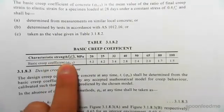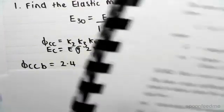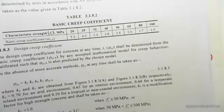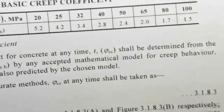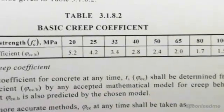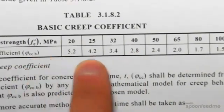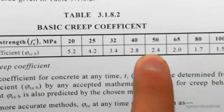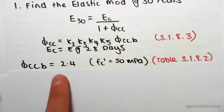For our problem, we know that fc' is 50 MPa. Using this table, I'll zoom in for you guys a bit. You can see that we're looking at 50 MPa, and φcc.b is 2.4. So that value is found.